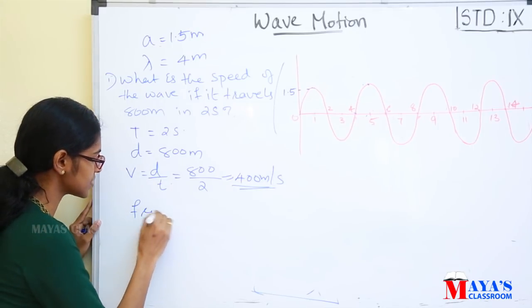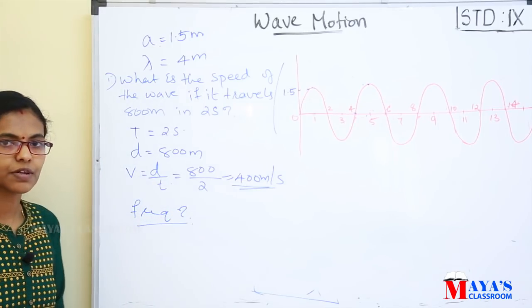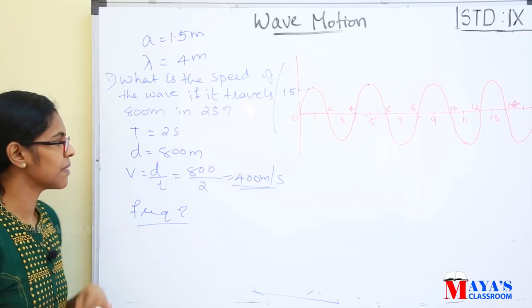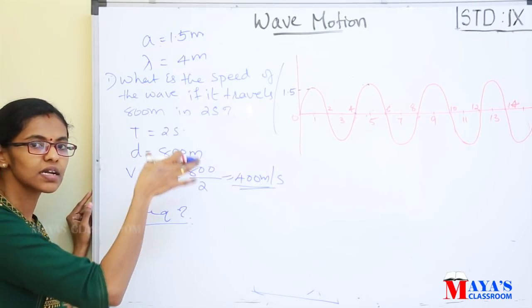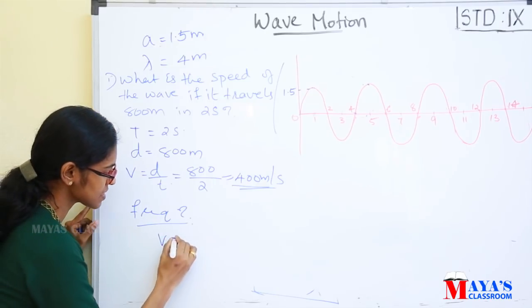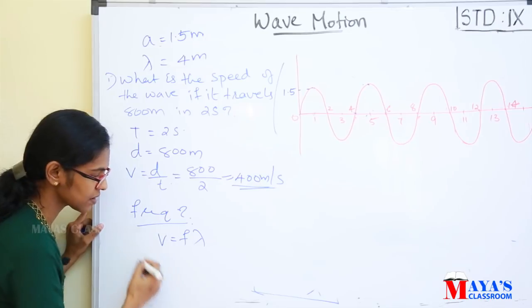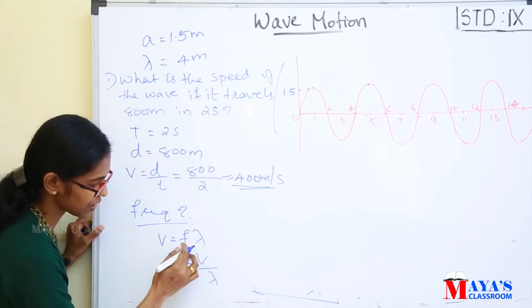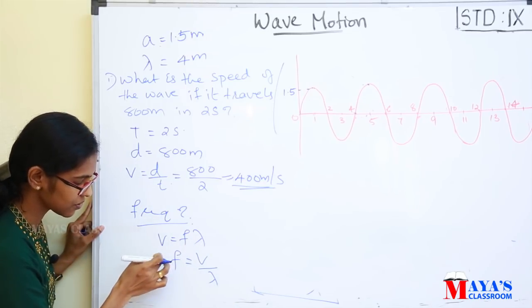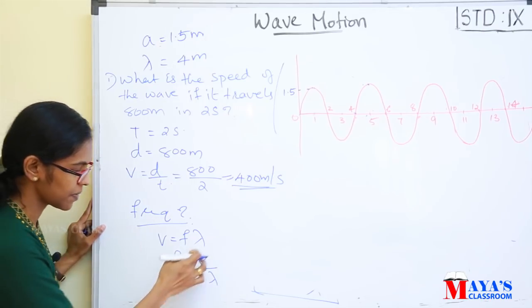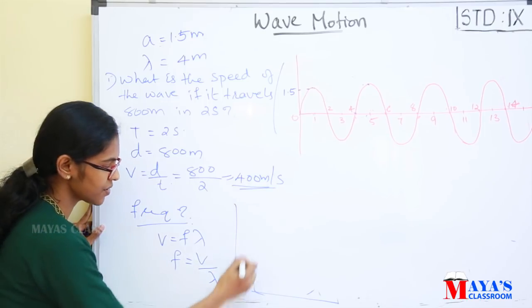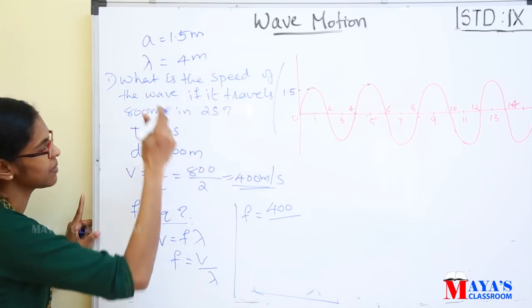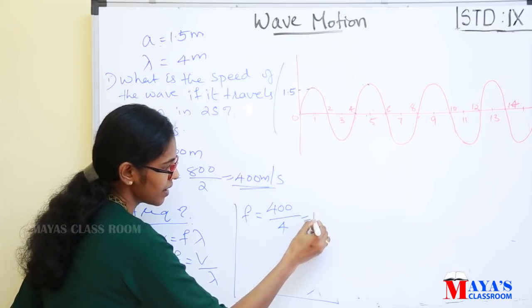Now let's find the frequency of the wave. Frequency is the number of vibrations per second. We use V is equal to f times lambda. Frequency is equal to V divided by lambda. That is f equals 400 divided by 4, equal to 100 Hz. The frequency of the wave is 100 Hz.